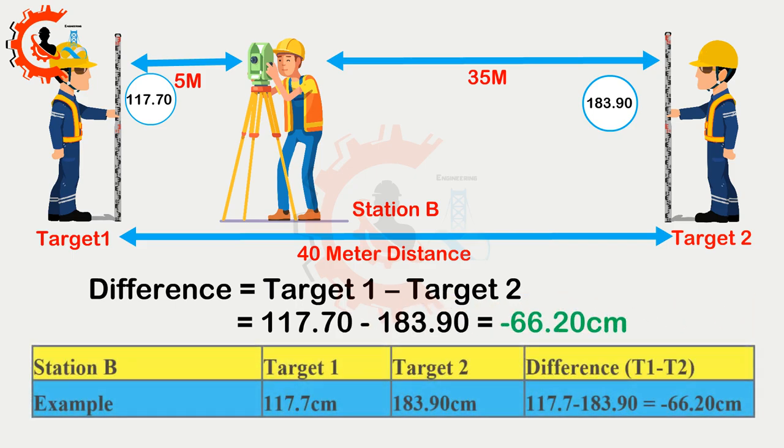Difference equals target 1 minus target 2 is equal to 117.70 minus 183.90 equals minus 66.20 centimeters.